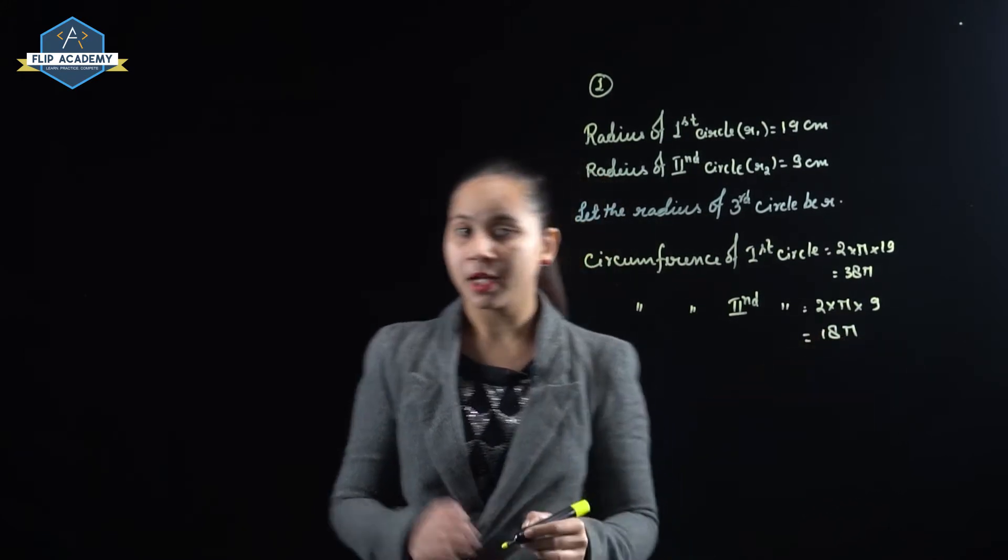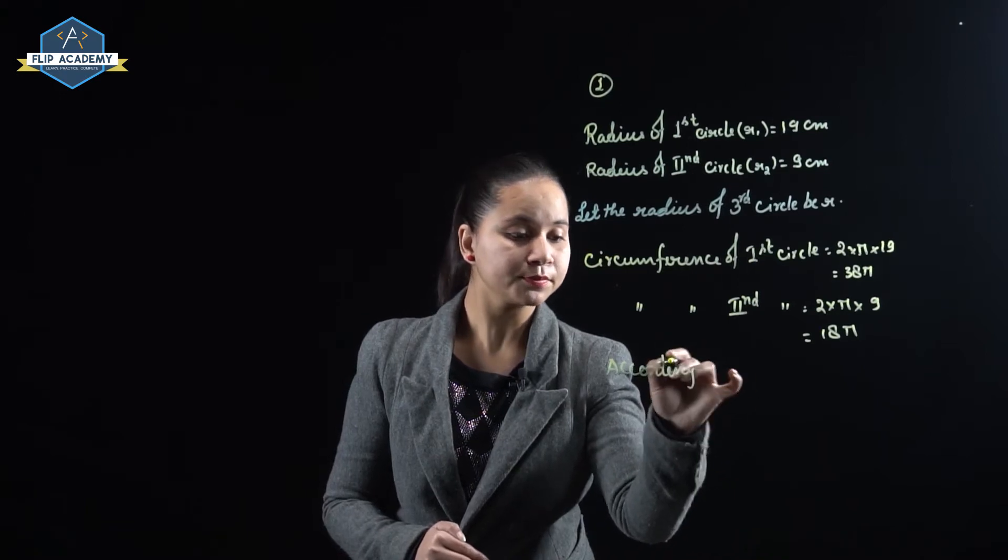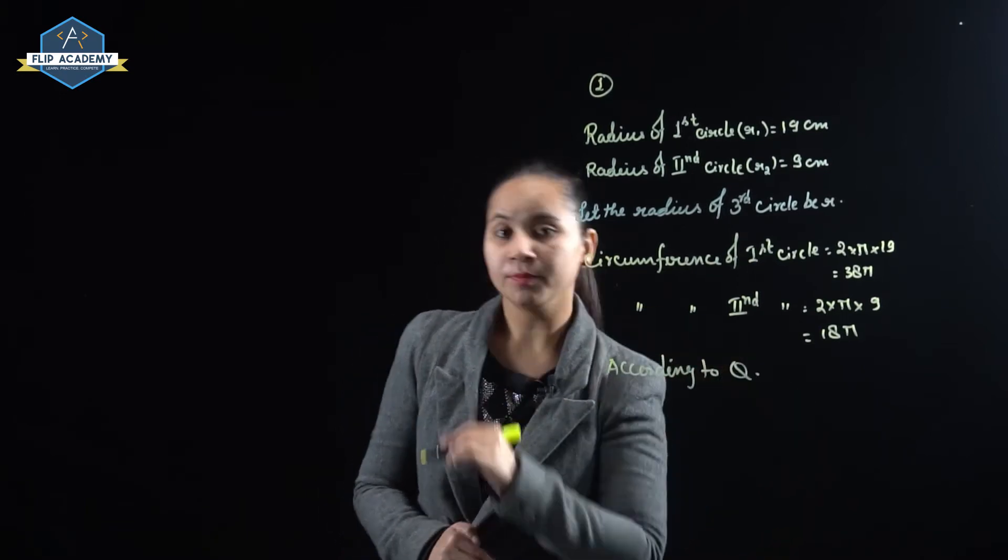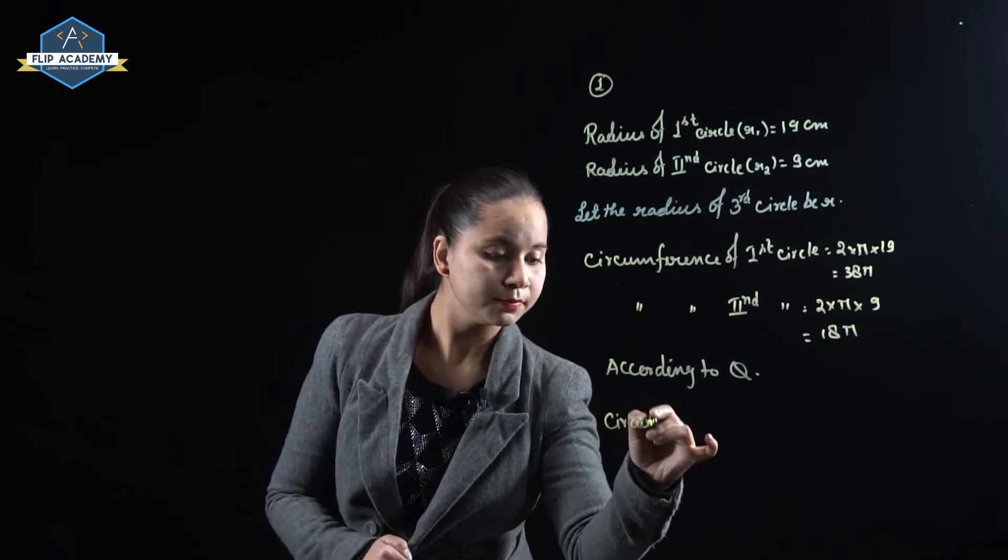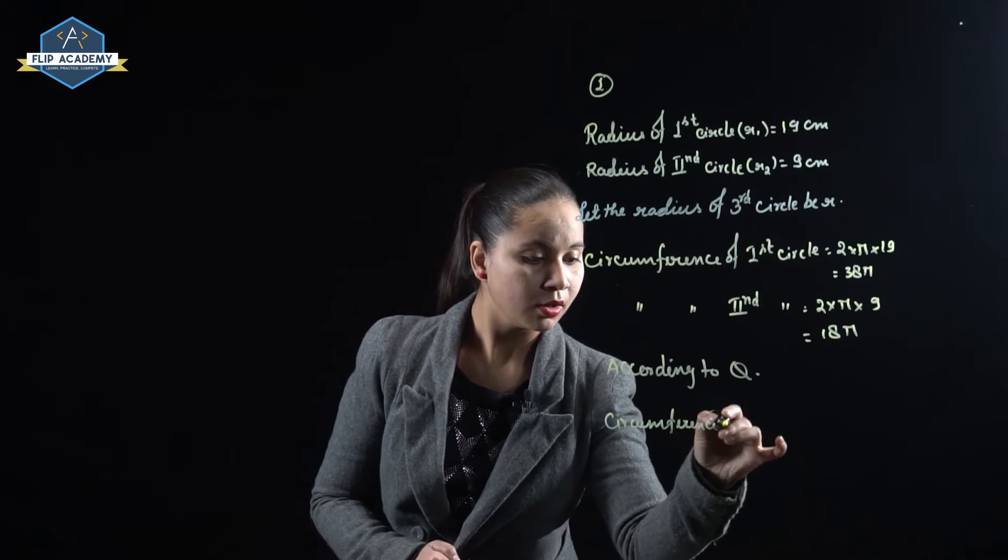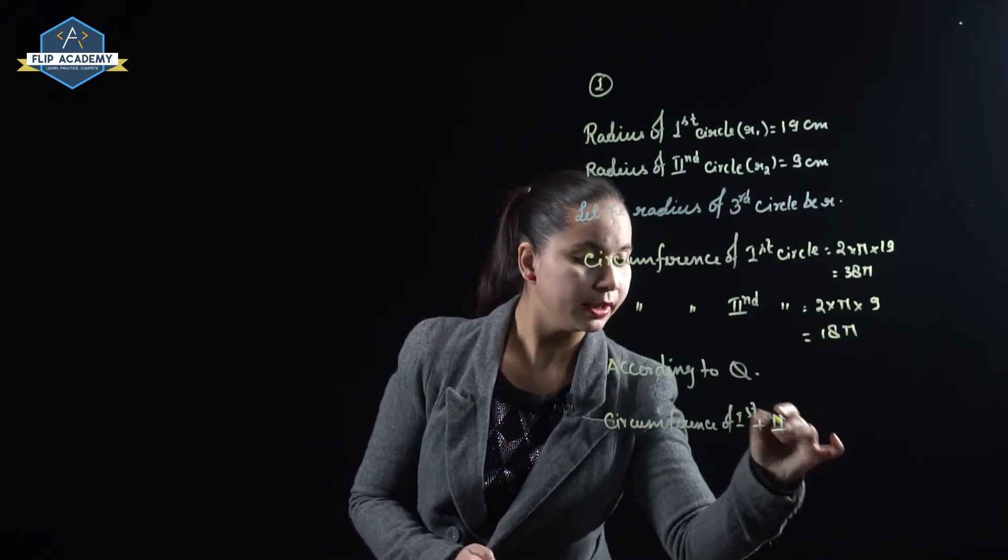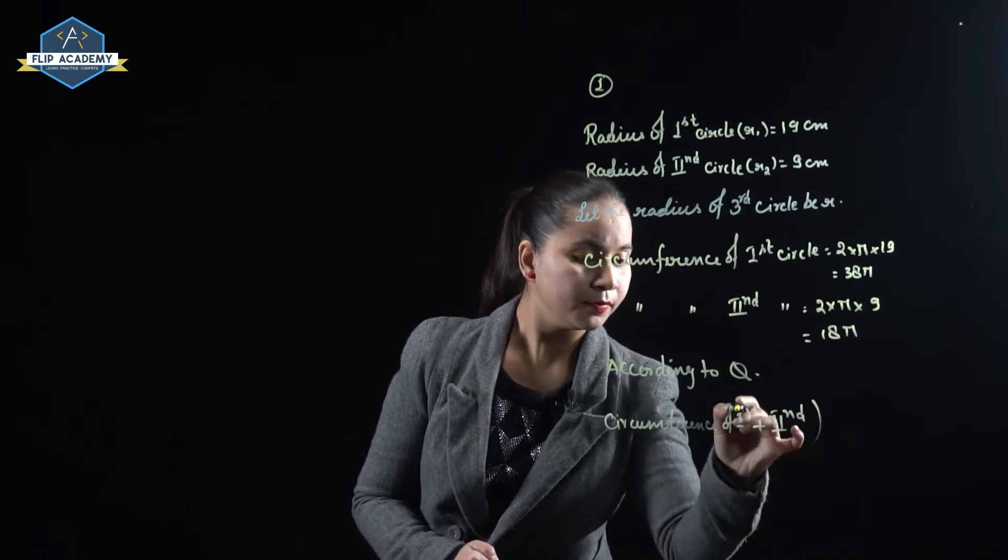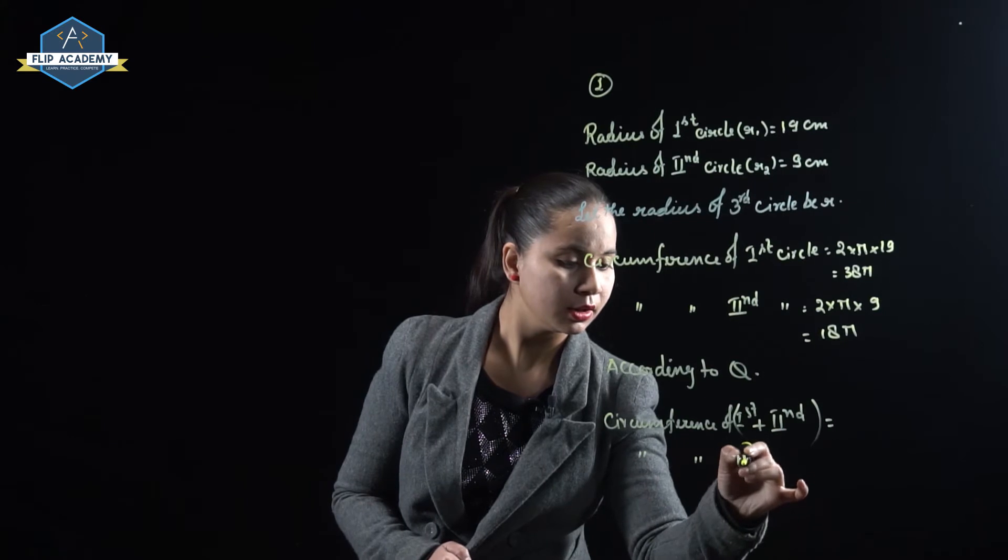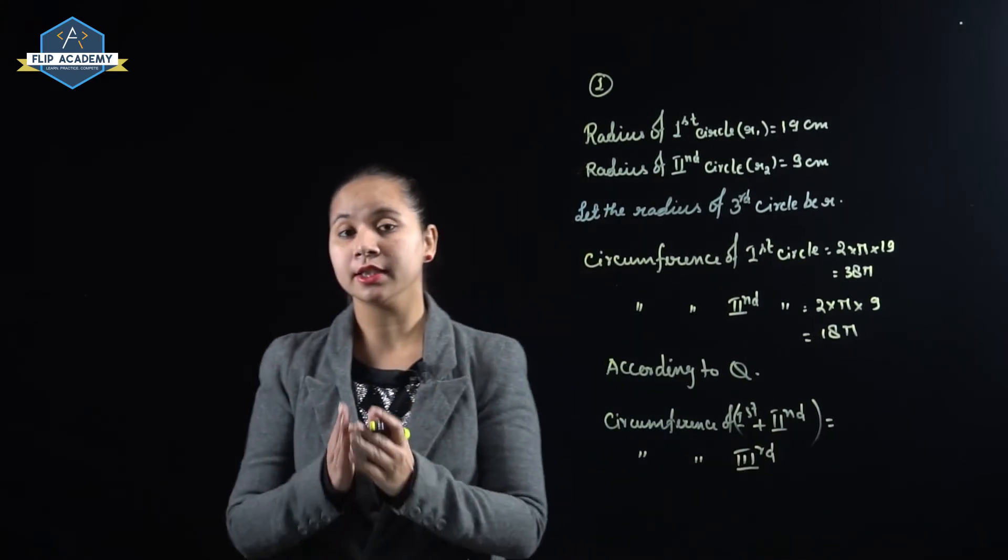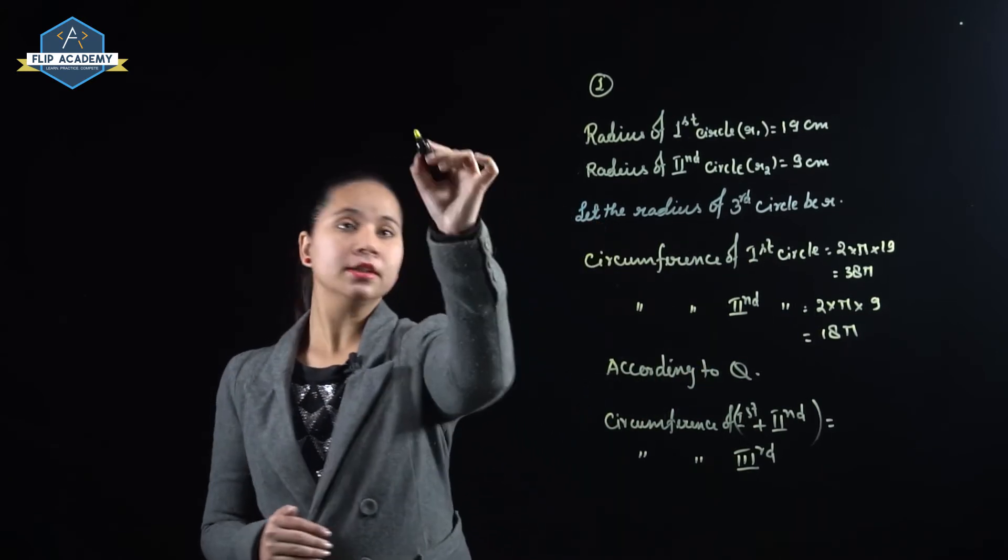Now if we go according to question, the condition is circumference of first plus second is equal to circumference of third. The first and second circumference sum is equal to the third circumference.